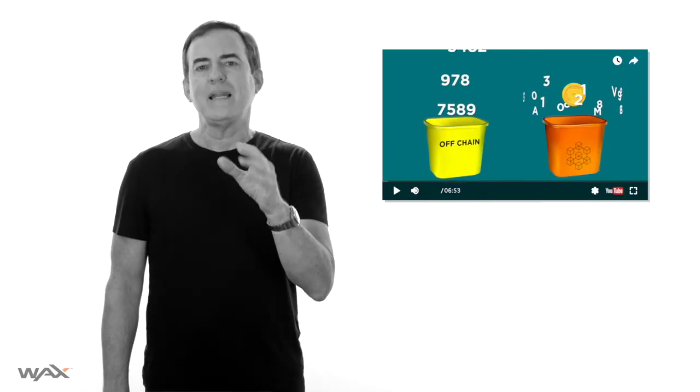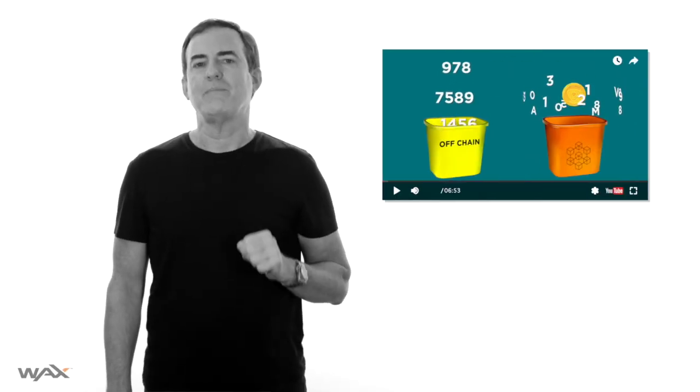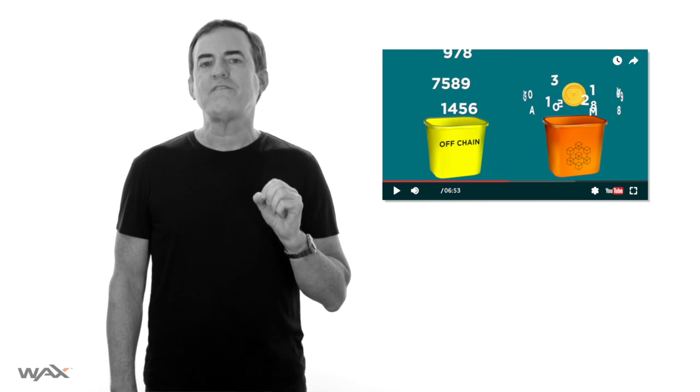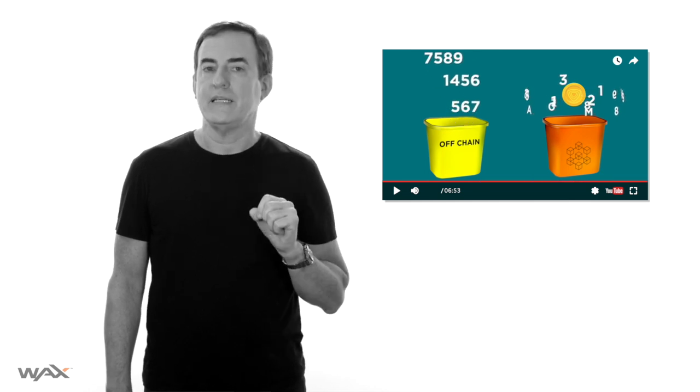How to analyze a blockchain project: the off-chain metrics you want to track. In my last video we talked about the off-chain metrics of a cryptocurrency. In this video I want to dive into the off-chain metrics of the blockchain itself — the blockchain that made that cryptocurrency.